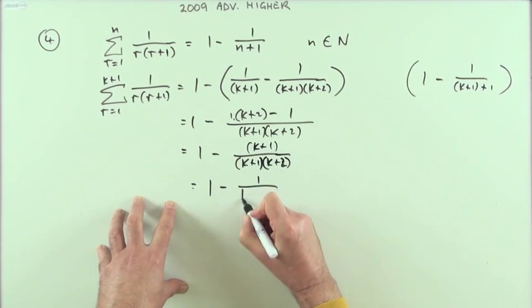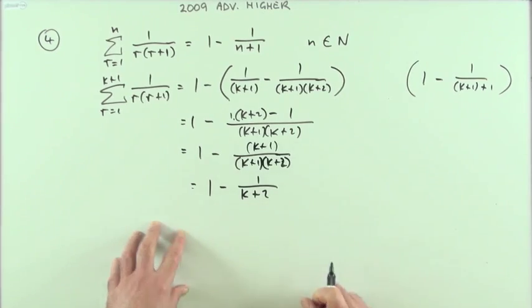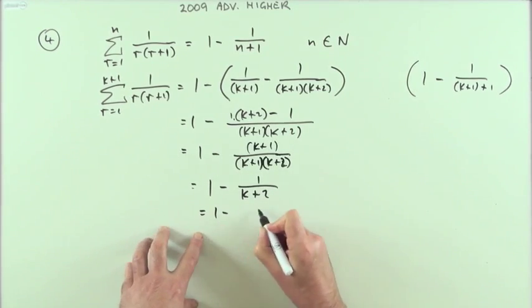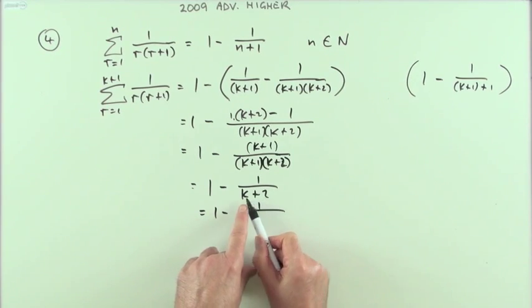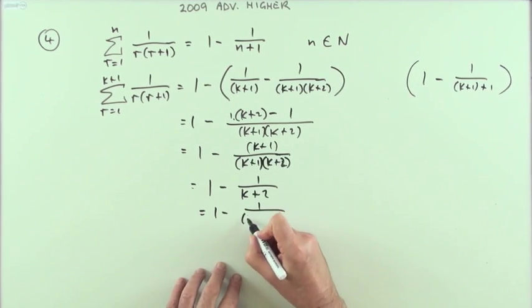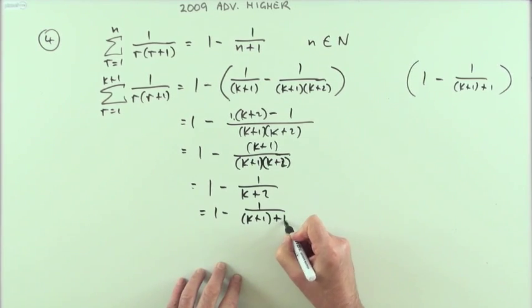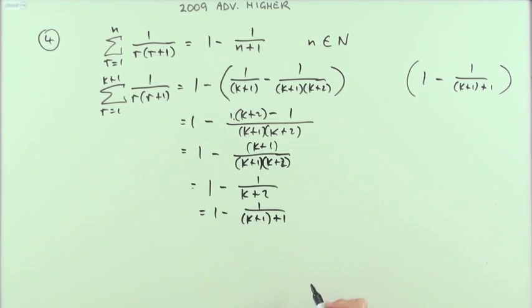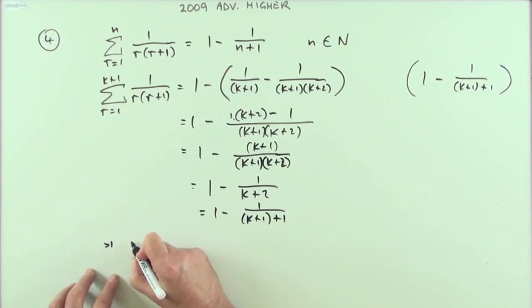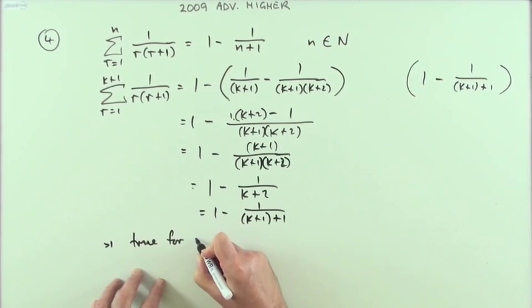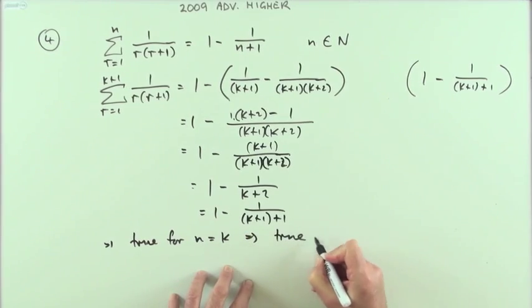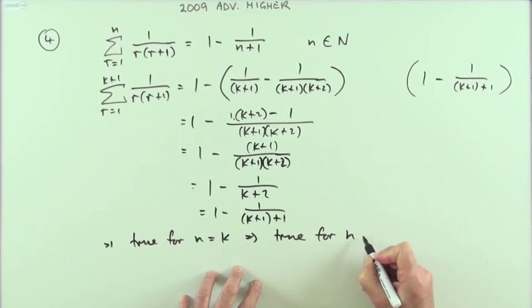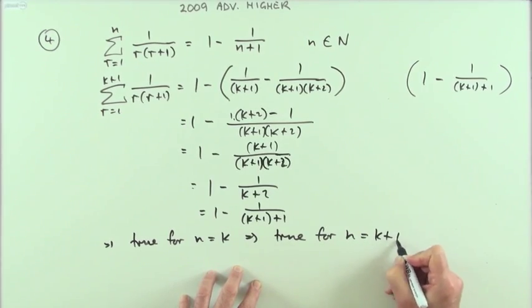Those two parts cancel out, leaving one over k plus two, and that's obviously the same as that. I'll just write explicitly that form by partitioning that expression into the parts that I want: a k plus one and a plus one, which is what I've got. Which is the correct form, which is true, which meant that if it was true for n equals k, that meant it was true for n equals k plus one.